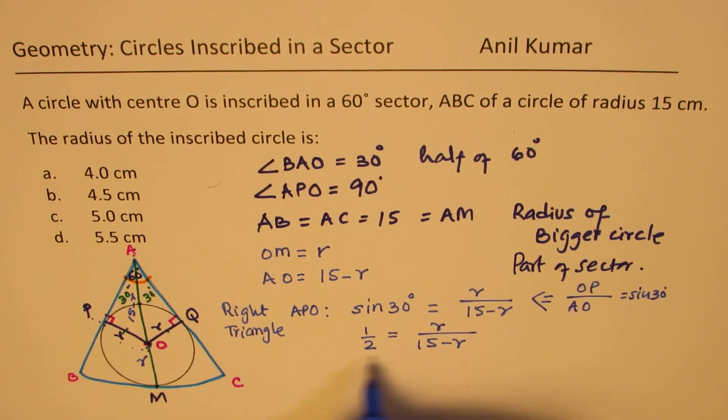So we get 15 minus R equals to 2R. Taking R to the other side, we get 15 equals to 3R. And then dividing by 3, we get 15 divided by 3 equals to R, which is 5.